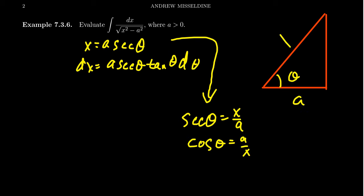So adjacent over hypotenuse. And then the other side is going to be the square root of x squared minus a squared, just from the Pythagorean identity.